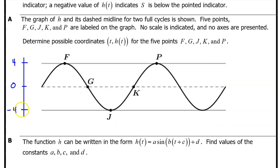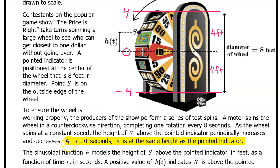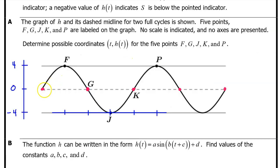With these five values on the vertical axis, we now know the output value of all five points. Now let's see if we can determine the input value of each point. At T equals zero seconds, S is at the same height as the pointed indicator. So at T equals zero, S is zero feet above the pointed indicator. So we need to pick one of these points where S is on the midline and call it T equals zero.